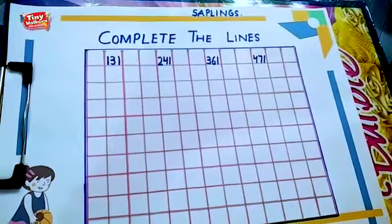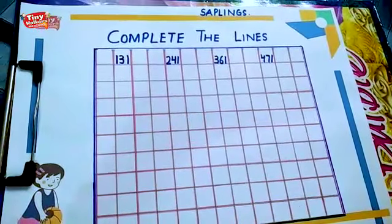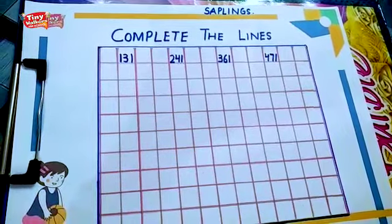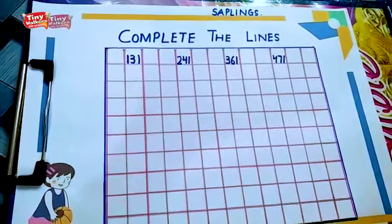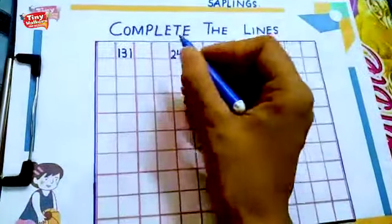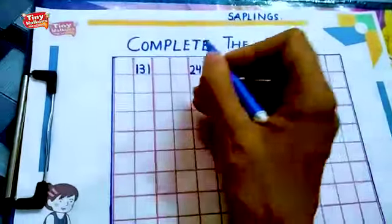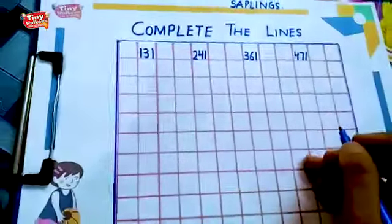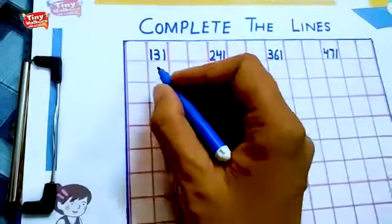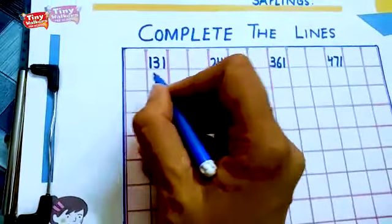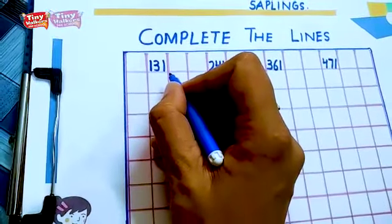Okay beta, now come to our topic. It's time for our math class. Today we are going to do complete the lines. Let's start. See, the first line is 131.